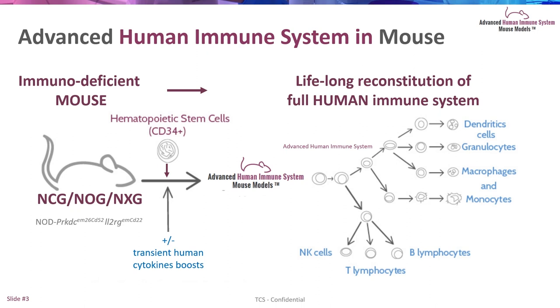We let the system mature for 14 weeks and we end up with a mouse that has a full human immune system — from the dendritic cells, the monocytes, the NK, the T, the B lymphocytes. All the cells are there, functional, able to interact with each other.